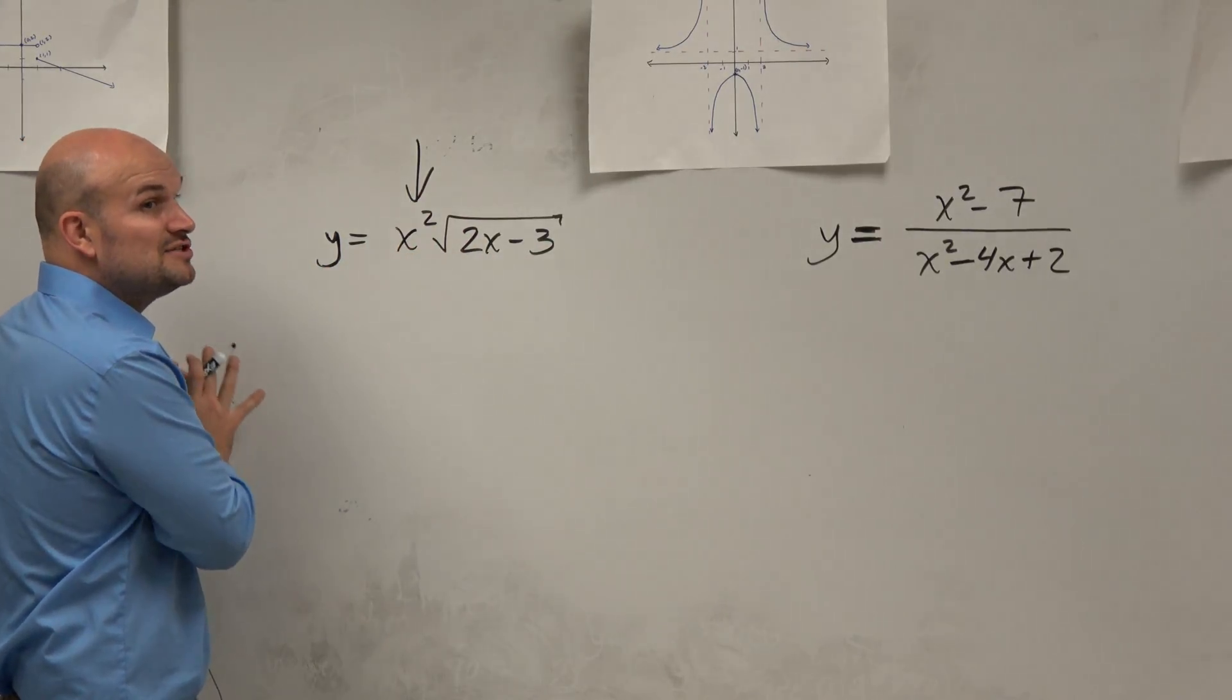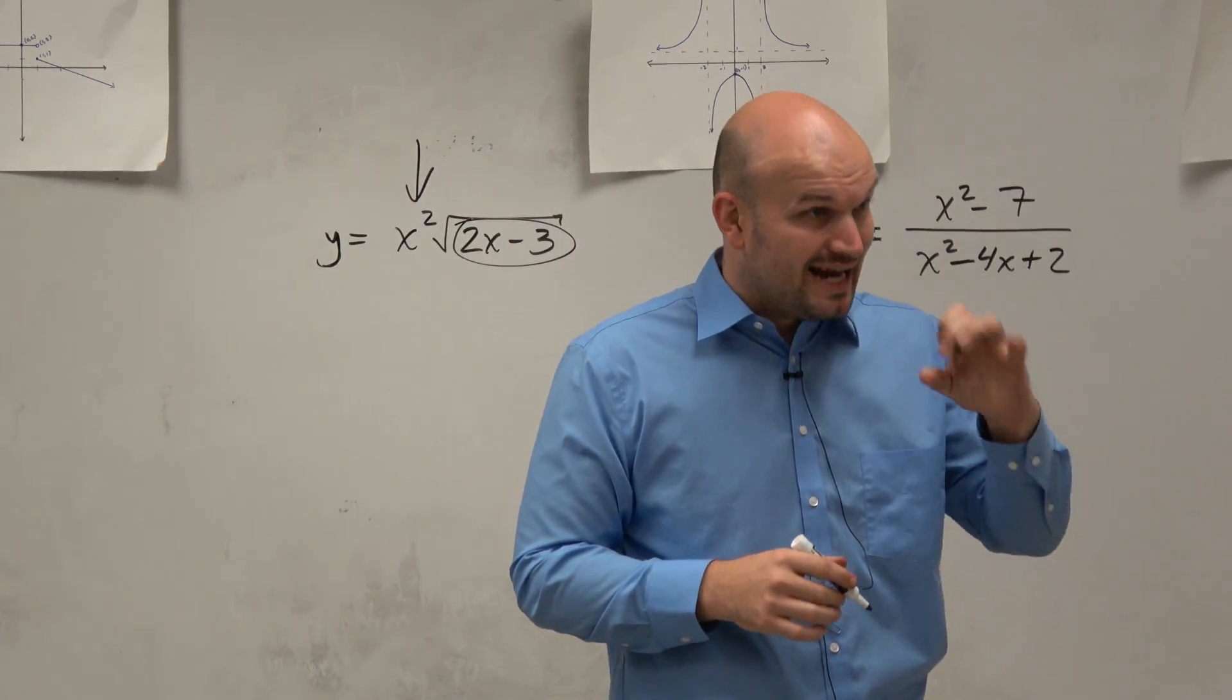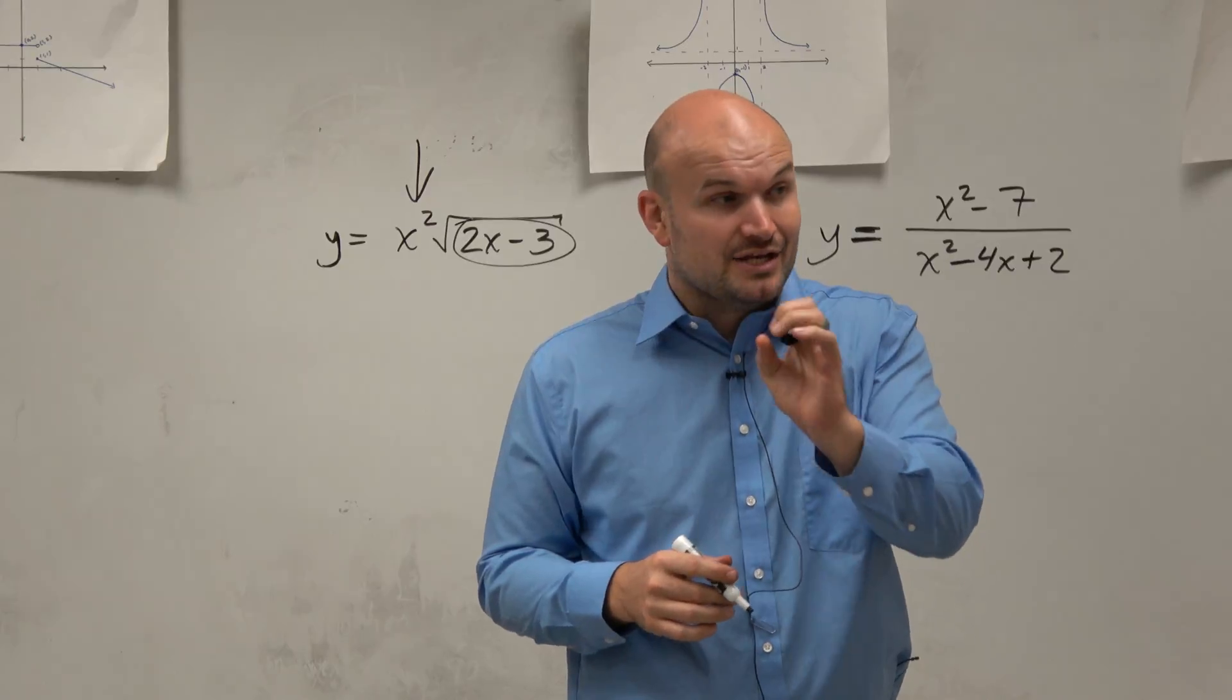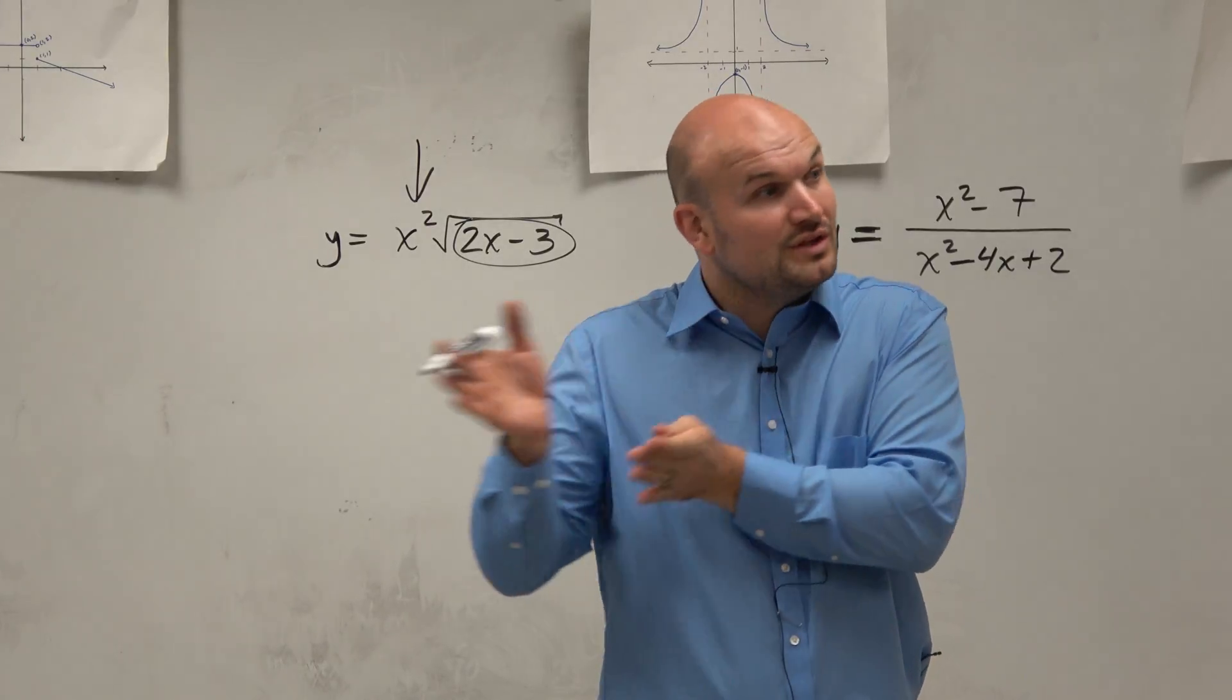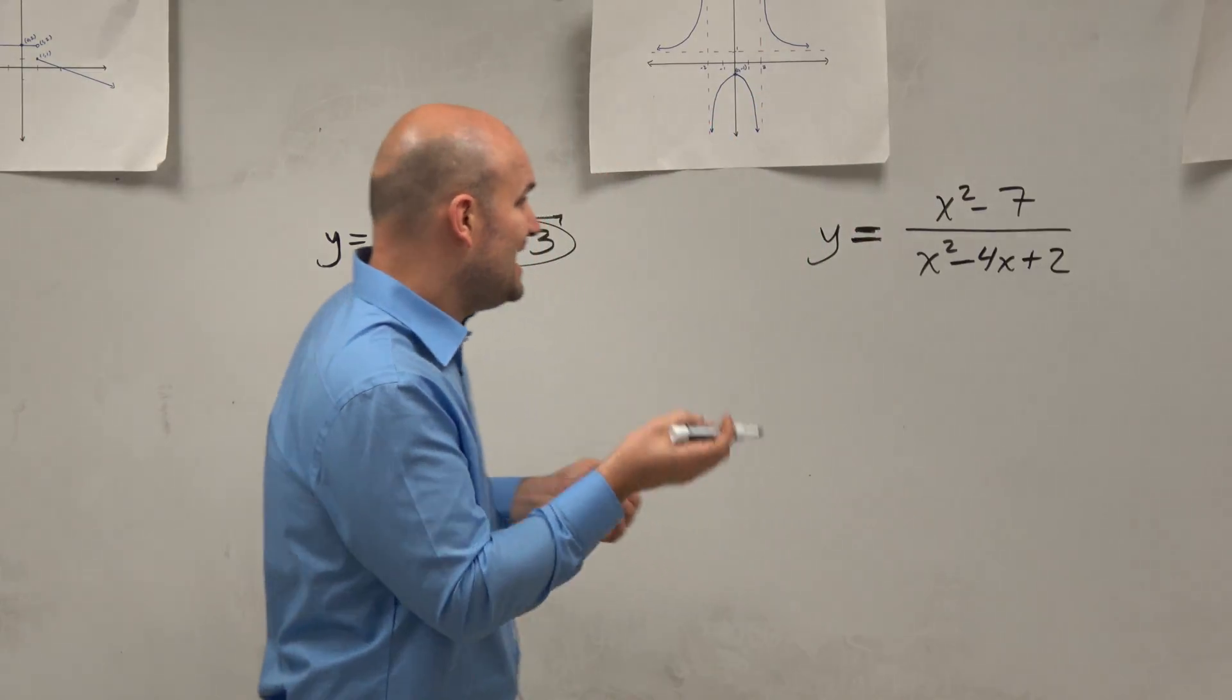Because the only thing that I'm concerned about is what's under the radical. Because I know when I'm trying to find the domain and I see something under a radical, I know that it is defined for only a certain amount of numbers. Only certain numbers that are going to make that radicand positive.